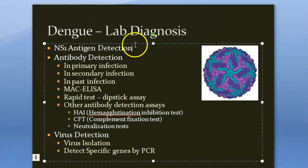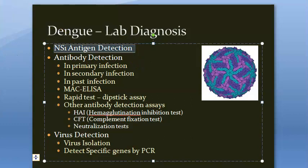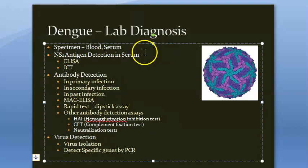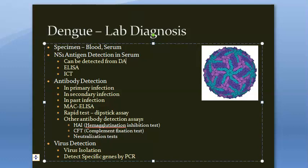Moving on to lab diagnosis — a very important part for exams. The first method is NS1 antigen detection. ELISA and ICT (immunochromatographic test) formats are available for detecting NS1 antigen in serum. This has gained popularity because it can be detected from day one of fever up to 18 days.